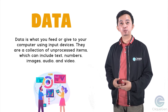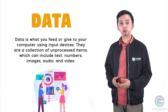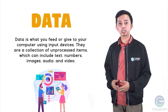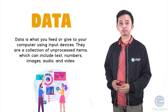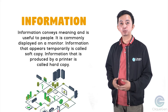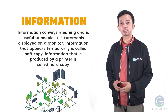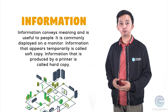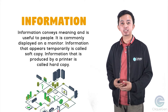Do you know what is the difference between data and information? Data is what you feed or give to your computer using input devices. They are a collection of unprocessed items which can include text, numbers, images, audio, and video. Information conveys meaning and is useful to people. It is commonly displayed on a monitor. Information that appears temporarily is called soft copy. Information that is produced by a printer is called hard copy.